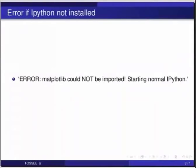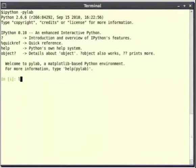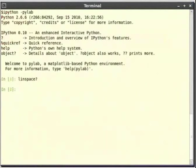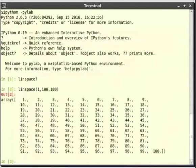Now type linspace followed by a question mark in your IPython shell. As the documentation says it returns num evenly spaced samples calculated over the interval start and stop. Now to illustrate this let's try to generate 100 points. Type linspace within brackets 1 comma 100 comma 100 and hit enter. As you can see a sequence of numbers from 1 to 100 appears.